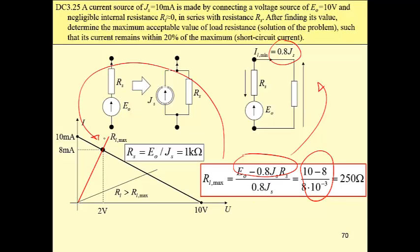So for values greater than 250Ω, current is lower than 8mA. For some value of load resistance greater than the maximum one, 250Ω, we have this resistance presented here in black.